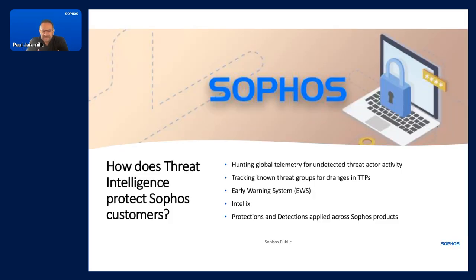So how does Sophos threat intelligence protect customers? We are hunting our global telemetry of 600,000 customers, looking for all threat actor activity that may go undetected. Certainly the vast majority is blocked and protected on our endpoints and firewalls. However, we're always looking for telemetry because threat actors are able to test and figure out ways to get around things. We're also tracking known threat groups and seeing how they may be changing. We offer an early warning service to help customers — even those without managed detection — if we feel like something critical may be happening in their environment. We also offer Intelics as a way to submit unknown binaries for analysis. And from all this intelligence, one of the biggest outputs is updating our protections and detections across Sophos products so we can more rapidly protect against emerging threats.